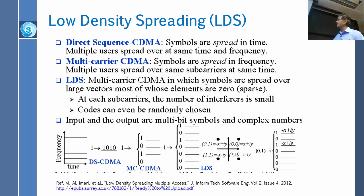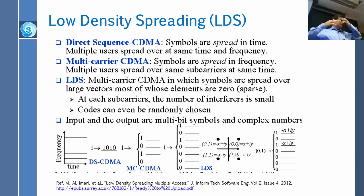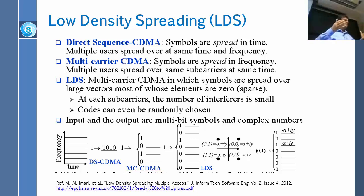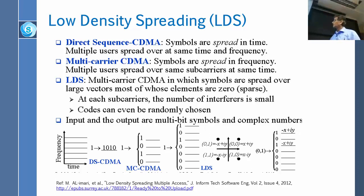This is called multi-carrier CDMA, and LDS extended it with two key ideas. First, in both MC-CDMA and DS-CDMA the codes are orthogonal. When you take four bits and look at combinations, only a very small number of codes are orthogonal, which means very few users can be supported and it takes time to select codes. So the question became: can we find a way to not worry about orthogonal codes and just randomly select them?